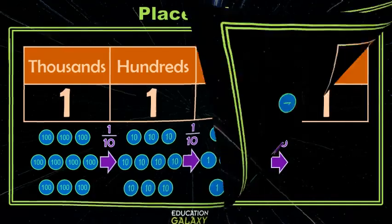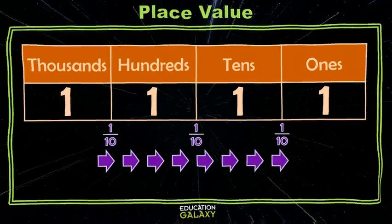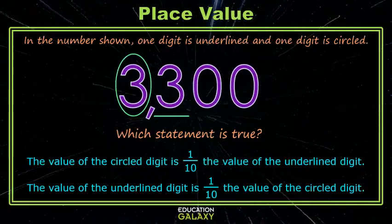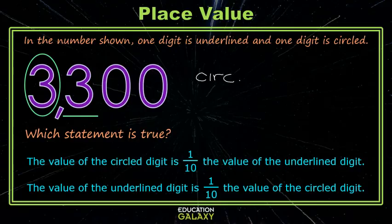So, in summary, as I move to the right on my place value chart, each place value position is one-tenth of the position to its left. Let's look at an example. Here we have 3,300. We want to compare the 3 in the thousands to the 3 in the hundreds. So, let's take a look. My circle digit is 3,000. My underline digit is 300.